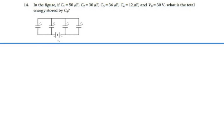Here's problem 26.14. In the figure, if C1 is equal to 50 microfarads, C2 is 30 microfarads, C3 is 36 microfarads, and C4 is 12 microfarads, the voltage of the battery is 30 volts, what is the total energy stored by capacitor C3?